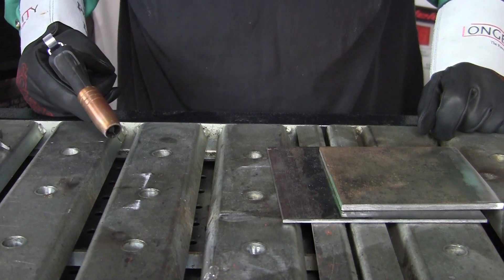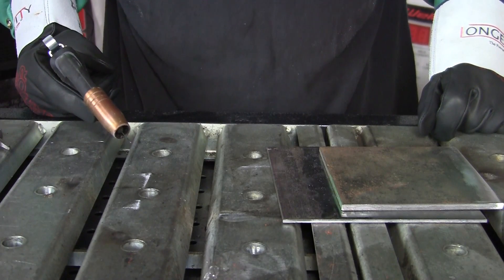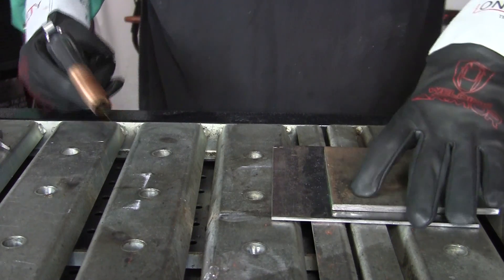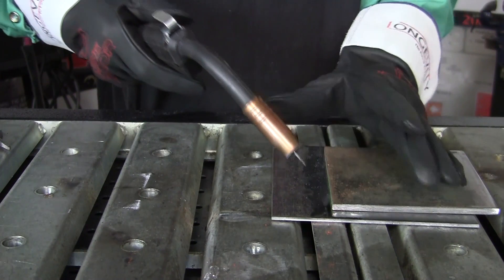This is the lap weld. Now what I'm going to do first is just go ahead and tack it in two spots to keep it down.